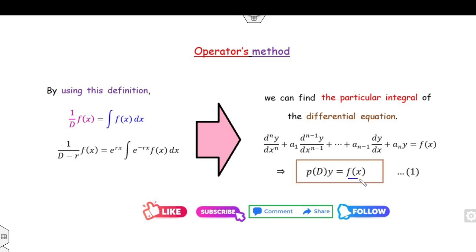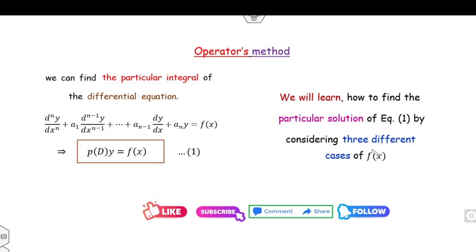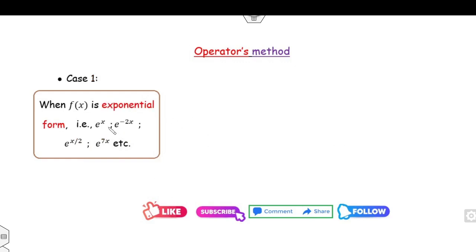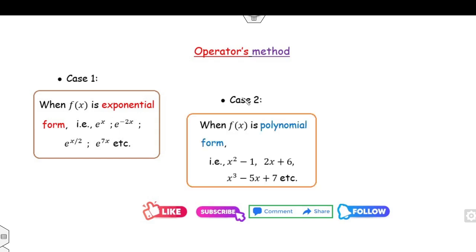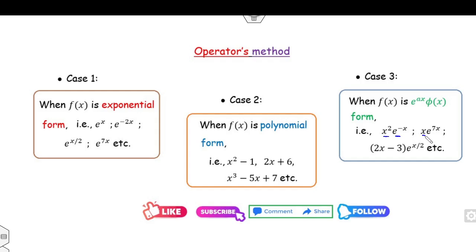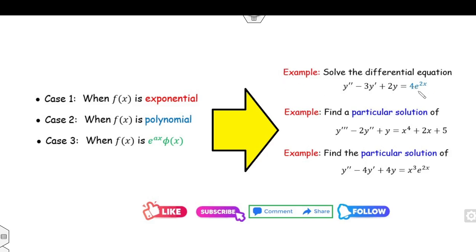Based on these two results for 1 over D and 1 over (D minus r), we can solve the particular integral. Remember, the target depends on the nature of f(x). We consider three different cases: f(x) may be of exponential nature, it may be of polynomial nature, or it may be of mixed nature — a product of polynomial and exponential.